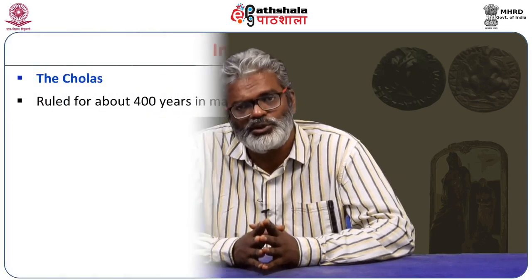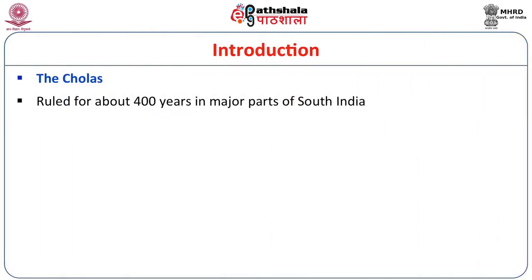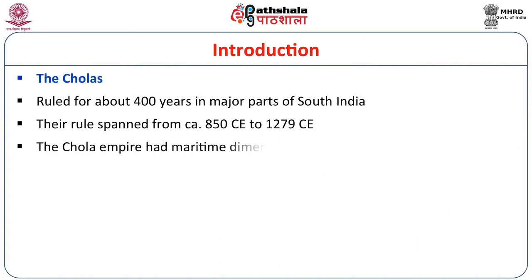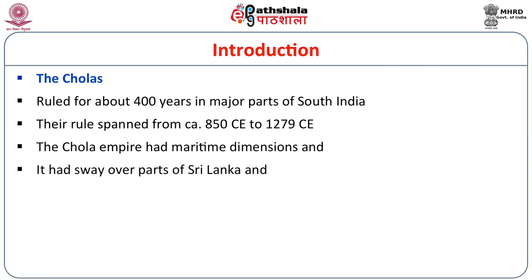The Cholas ruled for about 400 years in major parts of South India. Their rule spanned from roughly 850 CE to 1279. The Chola Empire also had a maritime dimension — it held sway over parts of Sri Lanka and interfered with the political affairs of Southeast Asia, at least for a brief span of time in the 11th century. That is why Chola history is studied by several researchers, because it dominated the Indian Ocean region for a significant period.